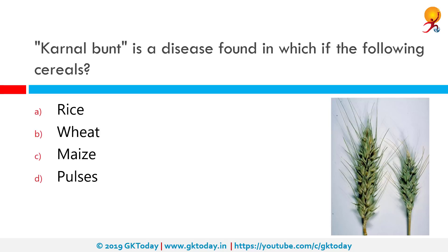Karnal bunt is a disease found in which of the following cereals? The correct answer is wheat. Karnal bunt is a fungal disease of wheat and it is caused by the smut fungus Tilletia indica. It invades the kernels and obtains nutrients from the endosperm, leaving behind waste products with a disagreeable odor that makes bunted kernels too unpalatable for use in flour or pasta.